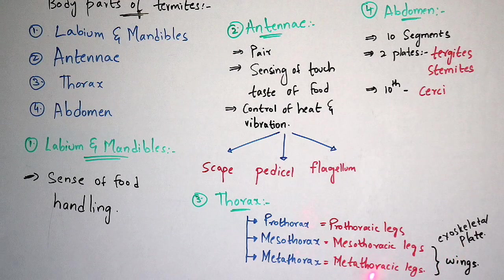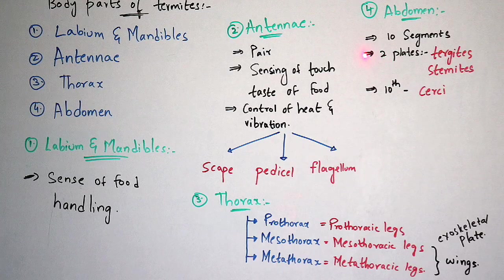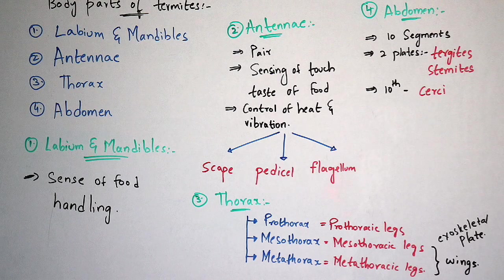The mesothoracic and metathoracic legs consist of wings, and they also consist of an exoskeletal plate which is very small in size. Coming to the abdomen: normally there are 10 abdominal segments in termites, and the abdomen region consists of two plates — tergites and sternites. In the tenth segment of the abdomen you can see the cerci (sarka). The cerci is present at the end of the abdomen region, and its main function is to help in the process of copulation, that is, in reproduction.